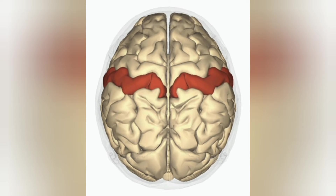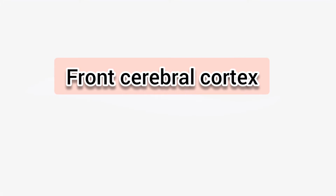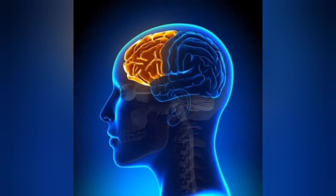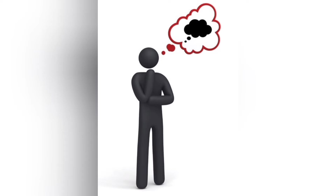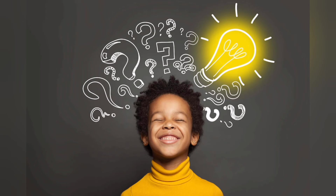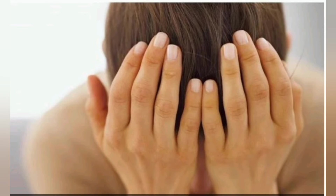The second one is the front cerebral cortex. This part is responsible for conscious thinking, planning, and understanding other people's thoughts. For example, if you want to plan anything, this part of the brain should function properly. If not, you can't plan anything or understand other people's thoughts.